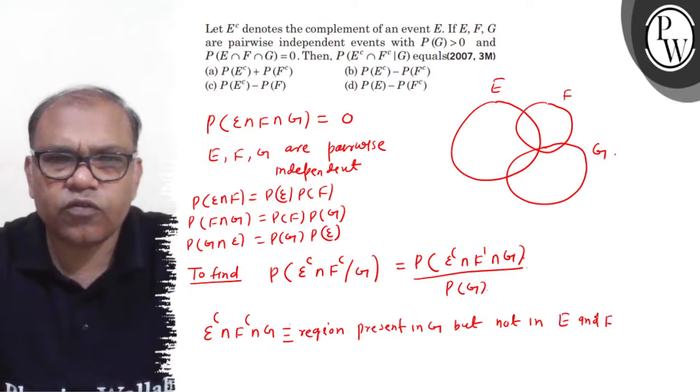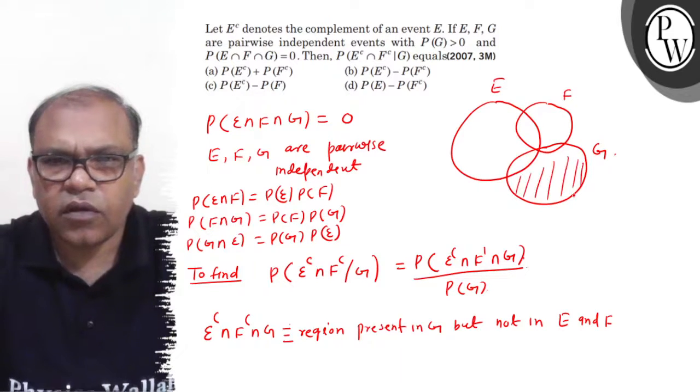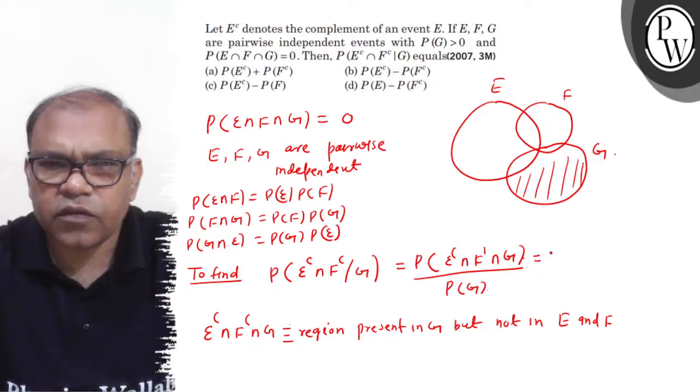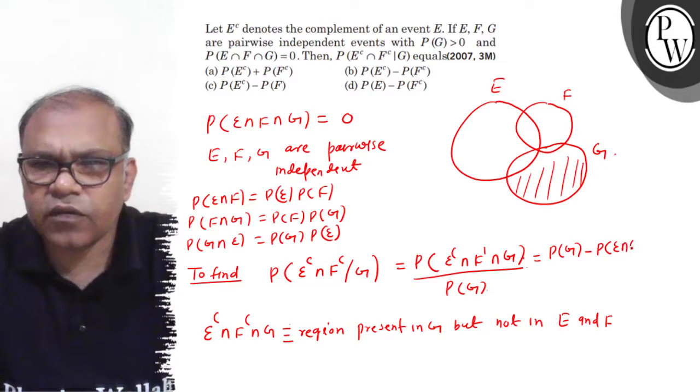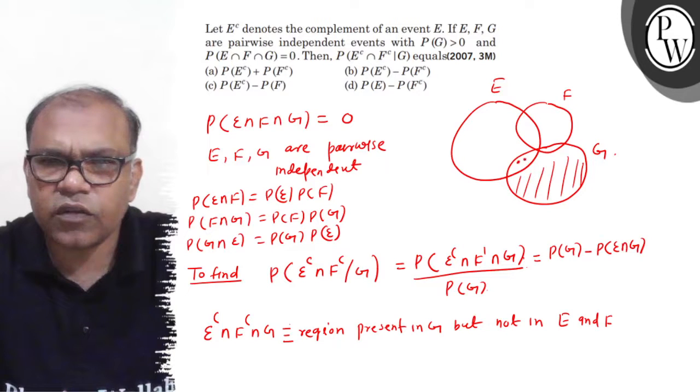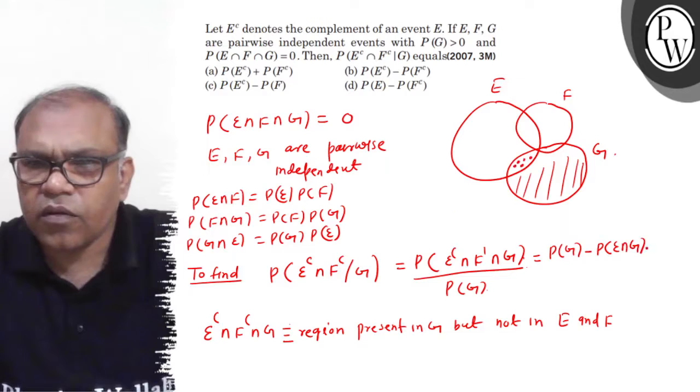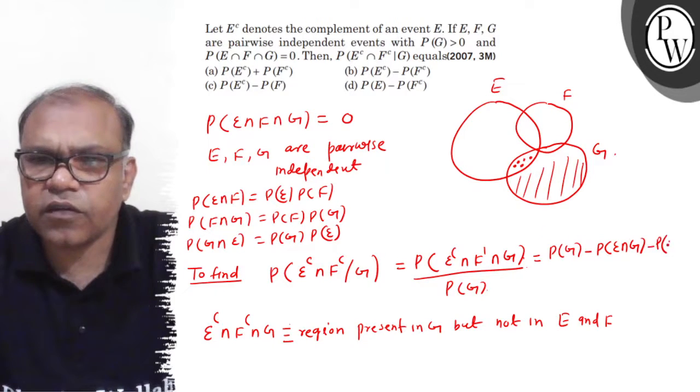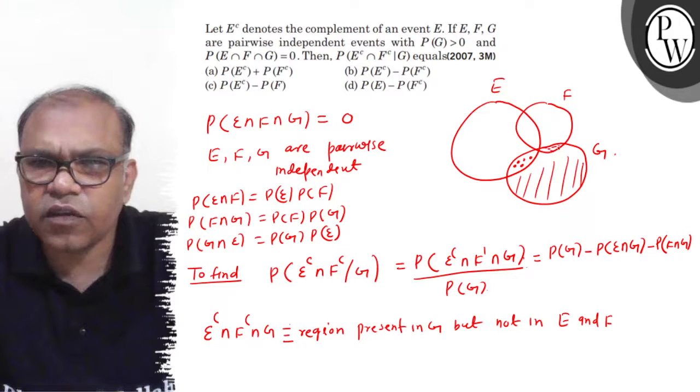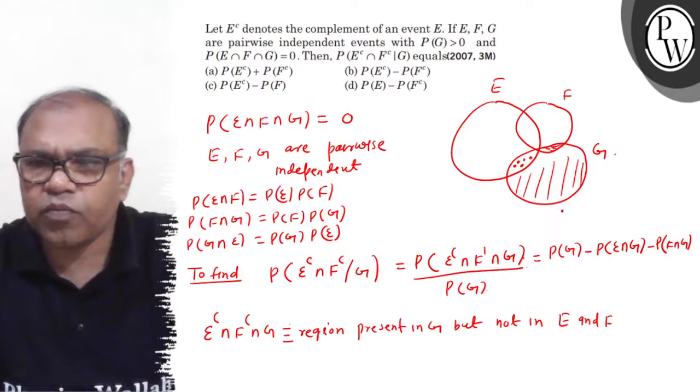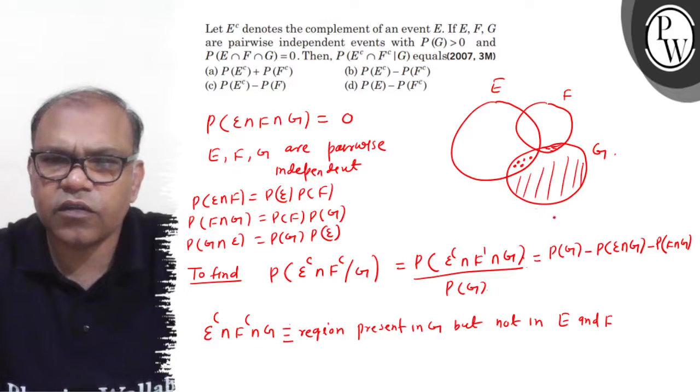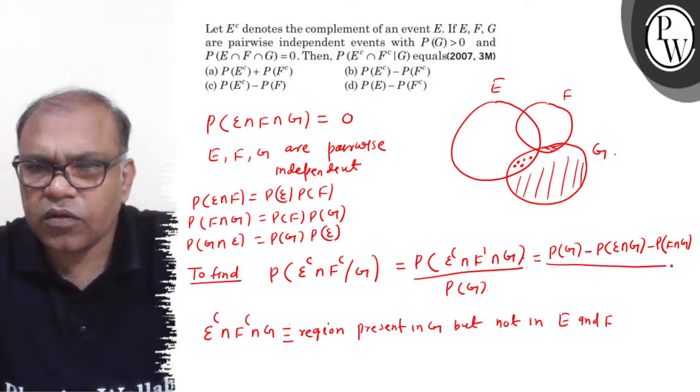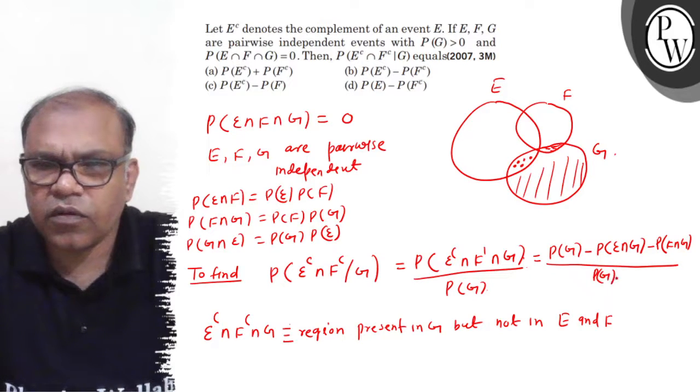So, the region which is in G but not in E and F, that region you can write as P(G) minus P(E ∩ G) minus P(F ∩ G). This region is E ∩ G, and this region is F ∩ G. So P(G) minus E ∩ G and F ∩ G.